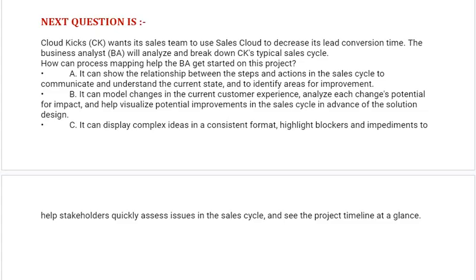Question: CloudKick (CK) wants its sales team to use Sales Cloud to decrease its lead conversion time. The Business Analyst (BA) will analyze and break down CK's typical sales cycle. How can process mapping help the BA get started on this project? Option A: It can show the relationship between the steps and actions in the sales cycle to communicate and understand the current state and to identify areas for improvement.